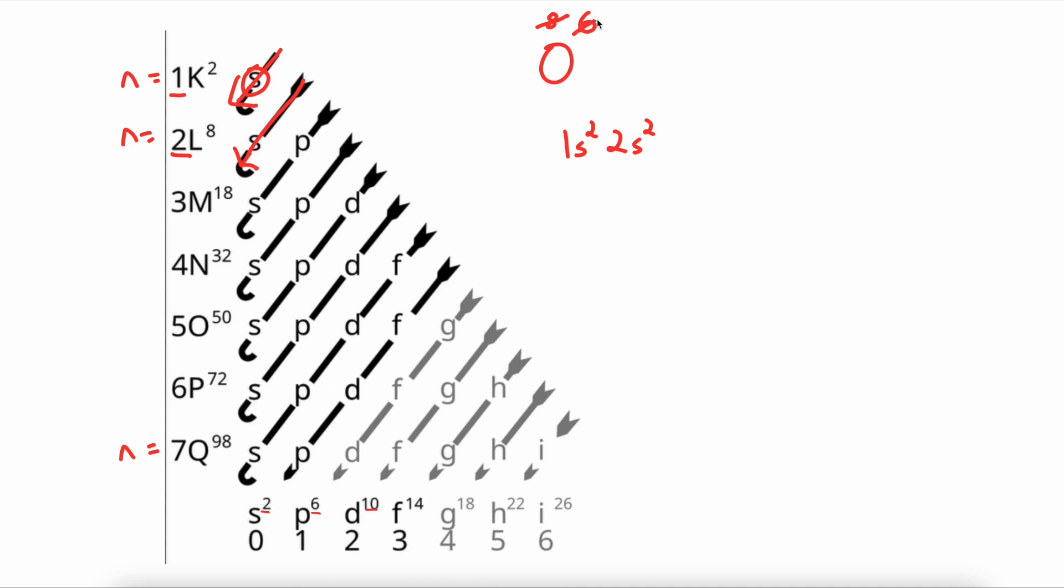And again, we subtract 2 electrons from our oxygen. We now go diagonally again. And the next letter that we hit is a P. The P sublevel can fit 6 electrons. And this P is in the second energy level.